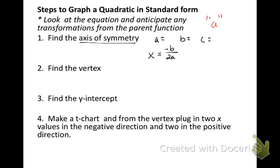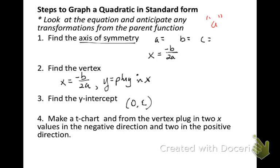That result is also the x value of the vertex. So for your vertex, the x value is the same as the axis of symmetry, and then to find the y value you simply plug that x in to the equation. You can also find the y-intercept by looking at the c value — that will be the point (0, c). Then you make a t-chart starting at the vertex, going two values in the negative direction and two values in the positive direction.